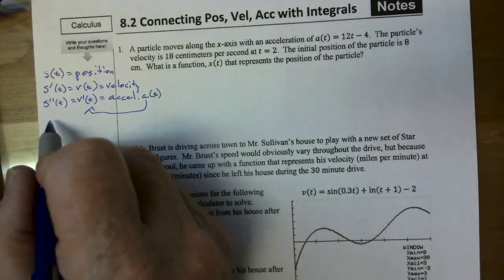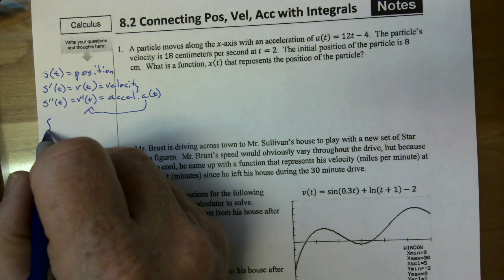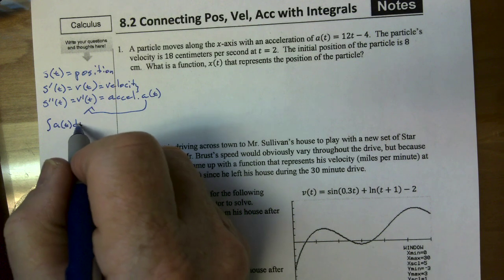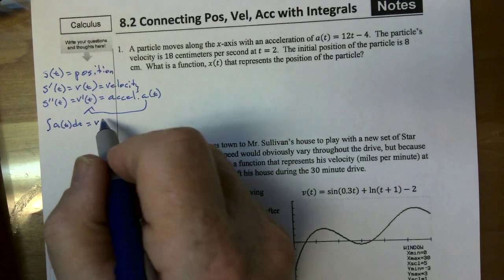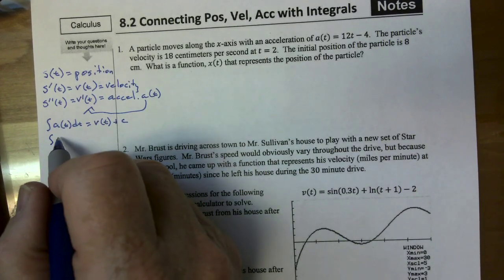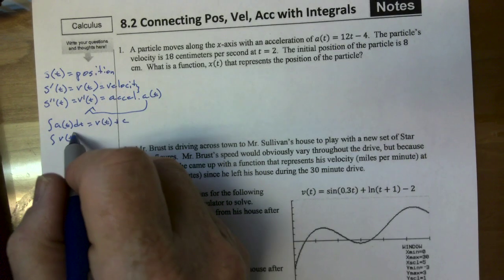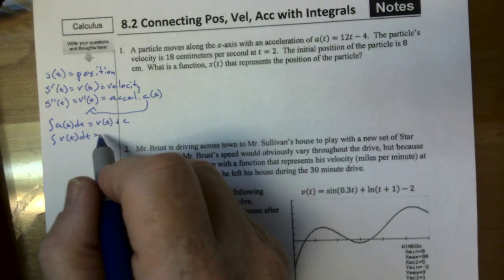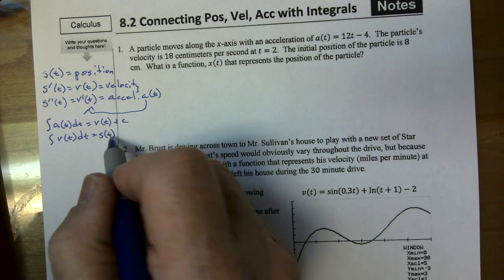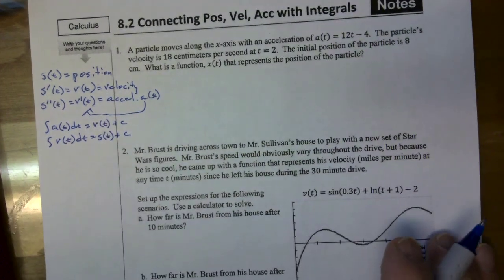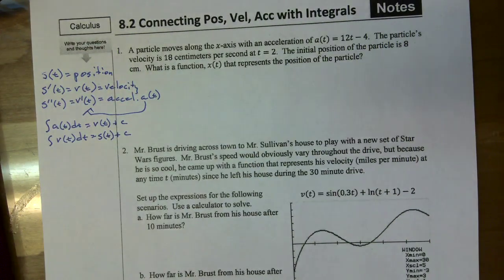Now, if we're going backwards: if I take the integral of the acceleration function, I'm going to get the velocity function plus some constant. And if I integrate the velocity function, I'm going to get the position function plus some constant. So what we're doing is really working backwards.